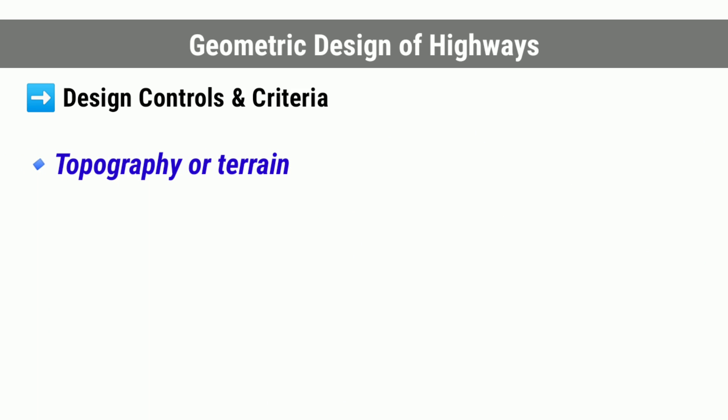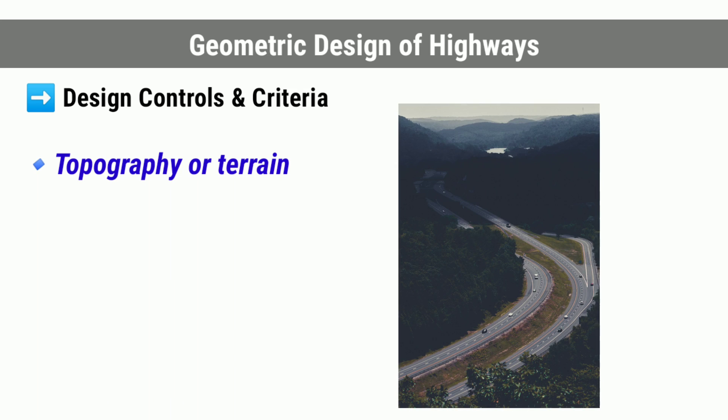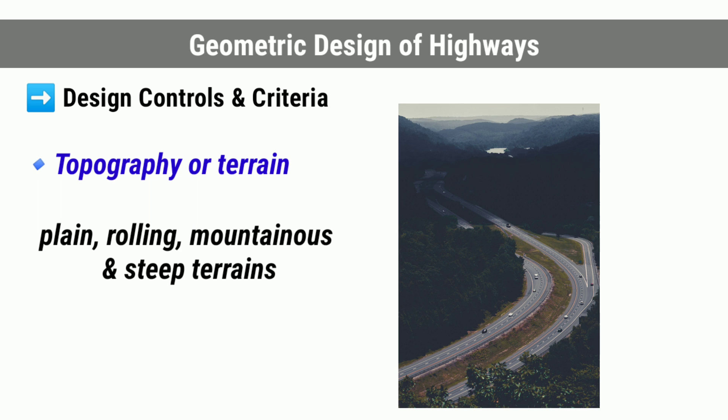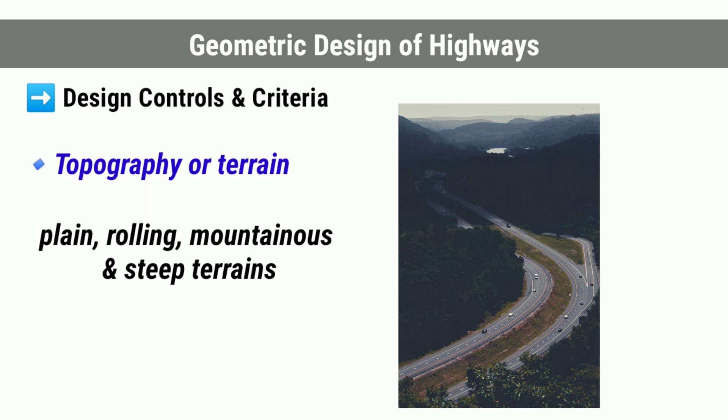The next factor is topography or terrain. The topography or terrain conditions influence the geometric design of highways significantly. The terrains are classified based on the general slope of the country across the alignment as plain, rolling, mountainous, and steep terrains.